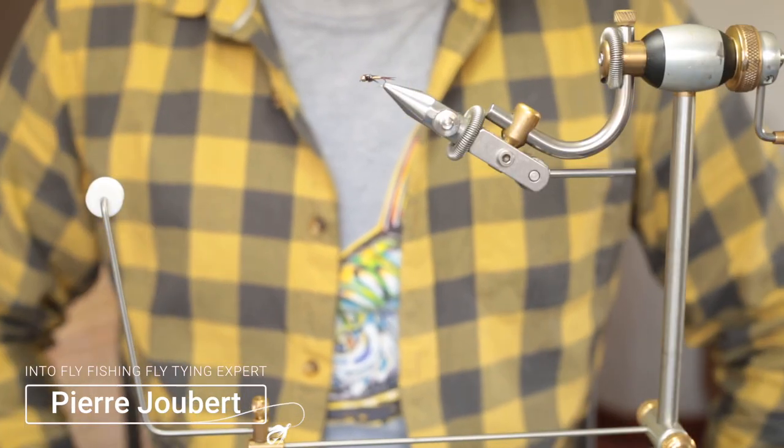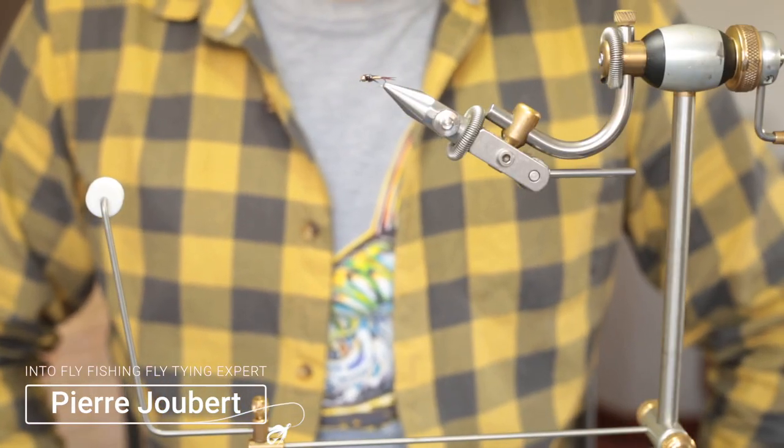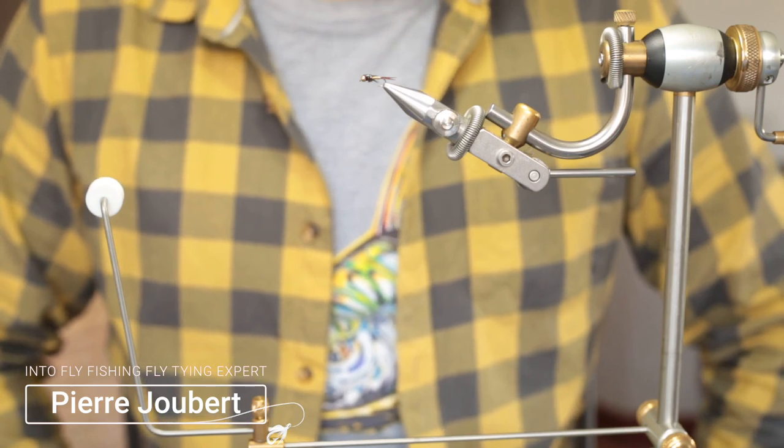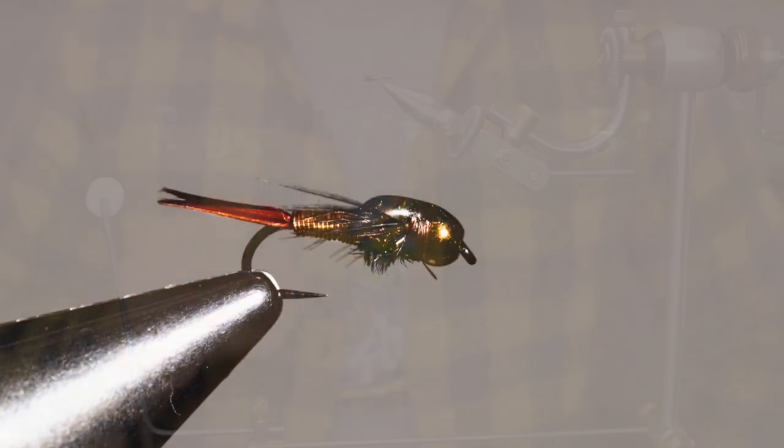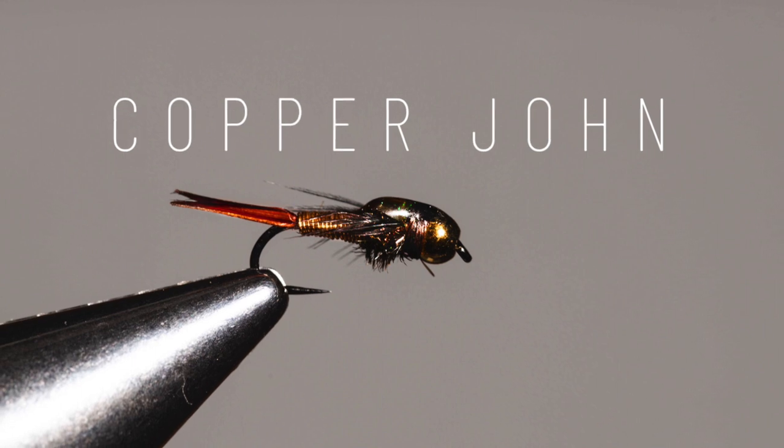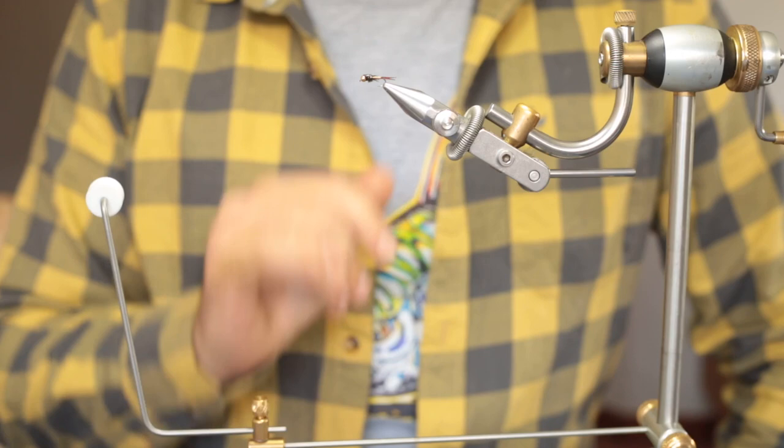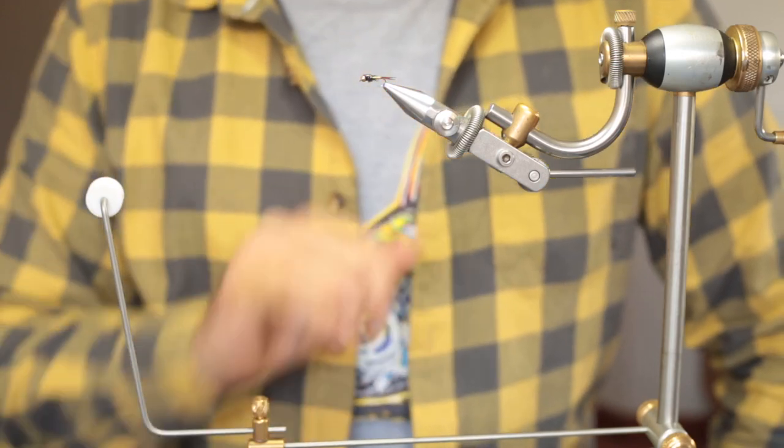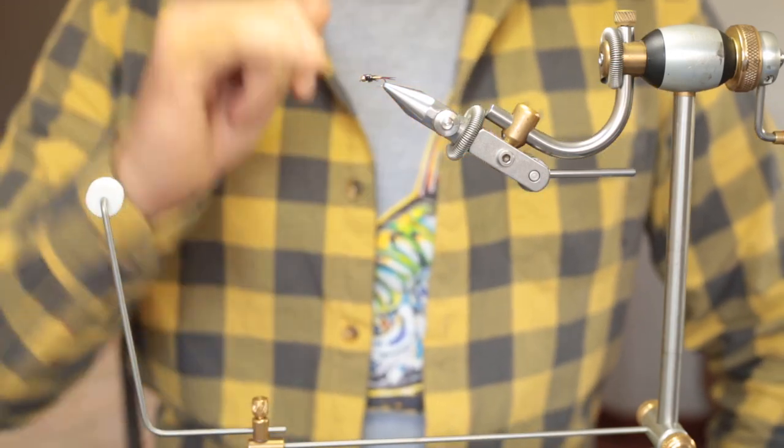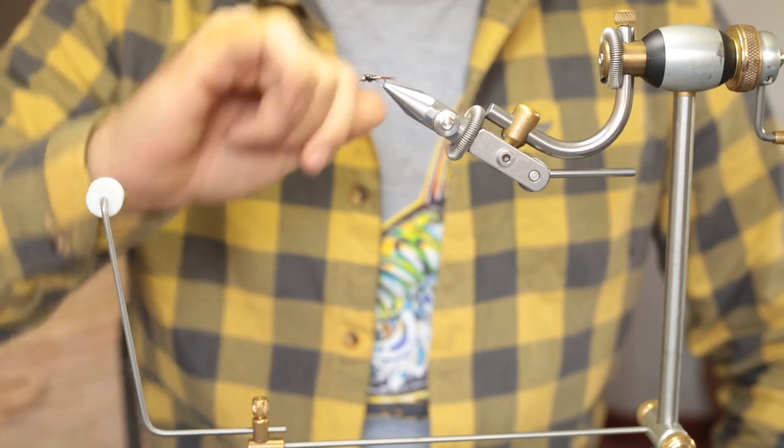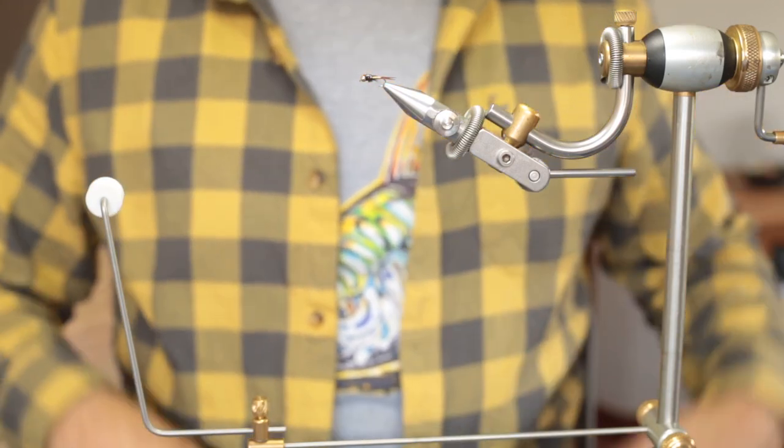Hey guys, Perio from Into Fly Fishing, and welcome to our channel. Today we're going to look at how to tie a copper john fly. It's a very effective nymph pattern that sinks very well, has a great profile, and features a little bit of flash on top of the nymph.